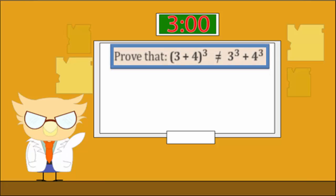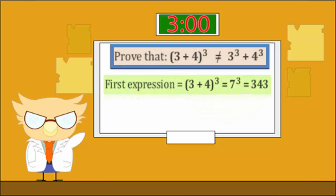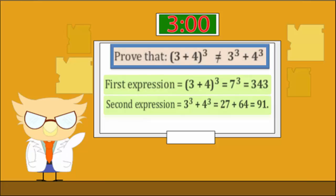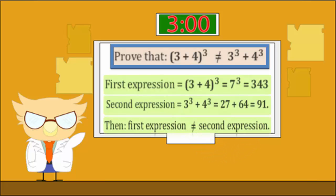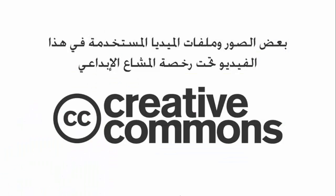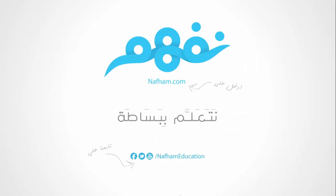Prove that 3 plus 4 all to the power 3 is not equal to 3 to the power 3 plus 4 to the power 3. Solution: To prove, we must find the value of both expressions. The first expression equals 3 plus 4 all to the power 3, which is 7 to the power 3, equals 343. The second expression equals 3 to the power 3 plus 4 to the power 3, equals 27 plus 64, equals 91. Therefore, the first expression is not equal to the second expression.